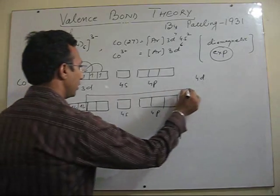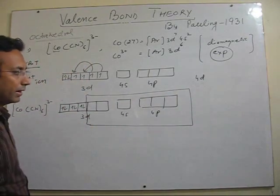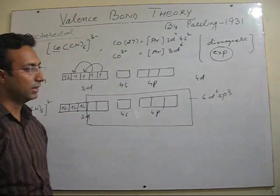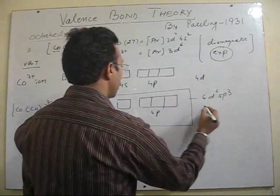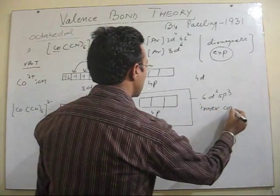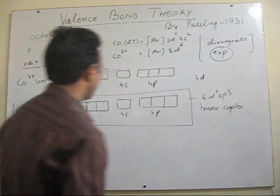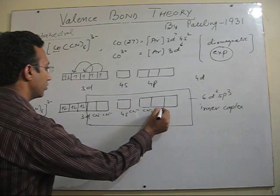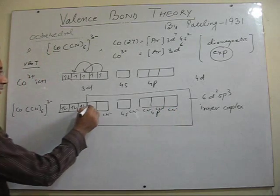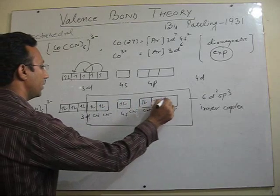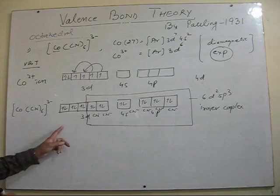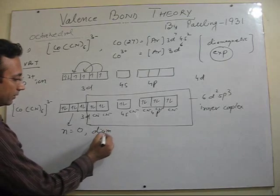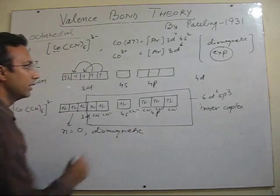Now you have 2d and 1s and 3p orbitals which are vacant now. But as I am continuing to explain, they have to hybridize first. So all these 6 will hybridize to give you 6 d2sp3 hybridized orbitals of same energy and same shape. So it will be again using 3d orbitals. So it is inner complex. Inner complex. So there will be 6 cyanide ions donating their 6 electrons, 6 lone pairs in these 6 hybridized orbitals forming same type of bonds with cobalt. So if you see that number of unpaired electron in this case 0. So therefore this complex is diamagnetic.